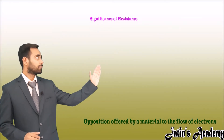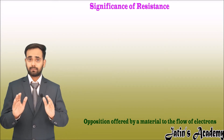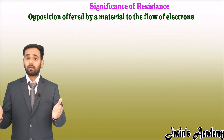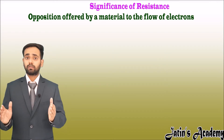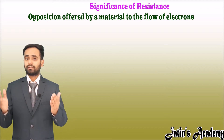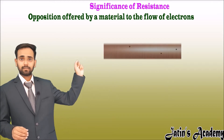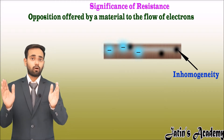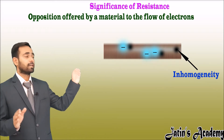Let's understand the significance of resistance. First, let us understand what resistance is. Resistance is the opposition offered by a material to the flow of electrons. Now the question arises: why does a material oppose the flow of electrons? To understand this, we have to see that each and every material is not homogeneous. For example, in a copper wire, there are some particles present which are not made up of copper atoms, and these particles oppose the flow of electrons because they do not conduct electrons.